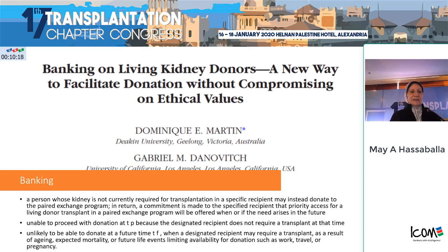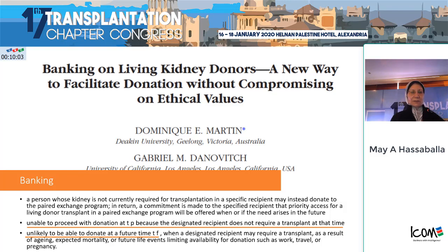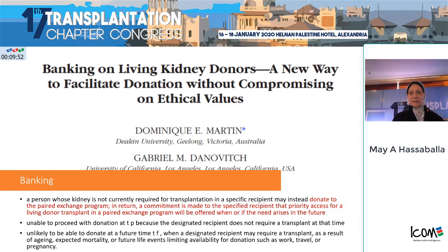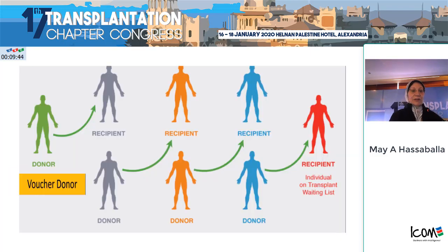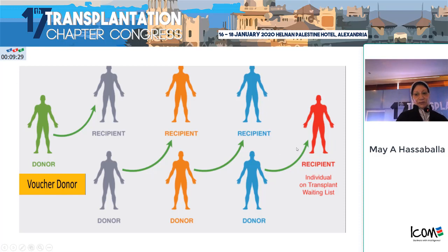Another innovation is banking — when the donor is not able to donate at the present time because the recipient is not yet in need of a kidney, but may not be able to donate in the future due to aging, unexpected mortality, or other events like work constraints or pregnancies. The donor donates to the paired kidney program, and in exchange there is a commitment that the recipient will have priority to receive a living donor transplant whenever needed. The future donor acts like an altruistic donor, opening a long chain helping many patients get transplanted. When that donor's paired recipient eventually needs a transplant, he receives the kidney that concludes the chain.